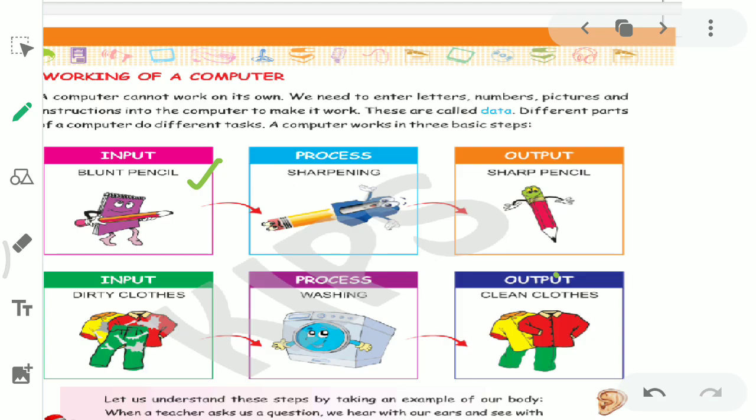Blunt pencil, then sharpening, then sharp pencil. So children, what they are saying through this example - that computer works on in three steps: input, process, output.